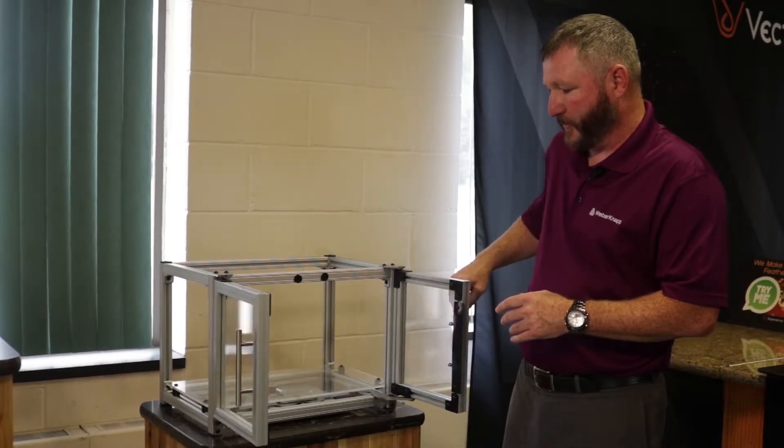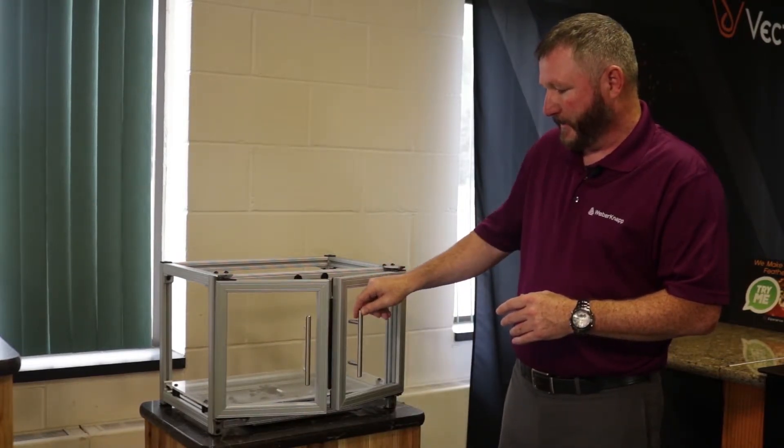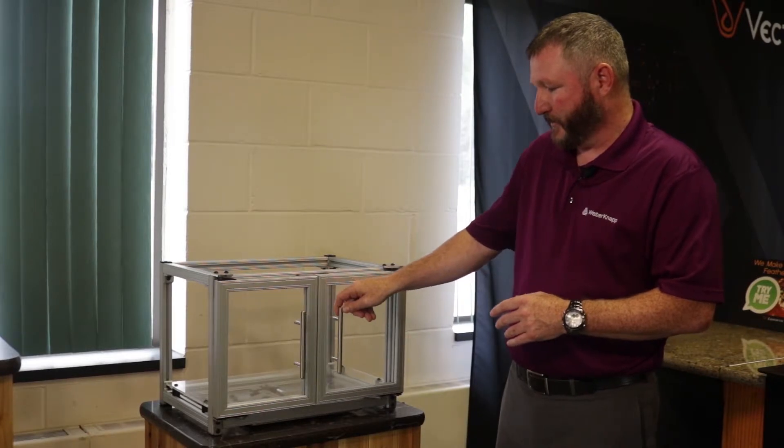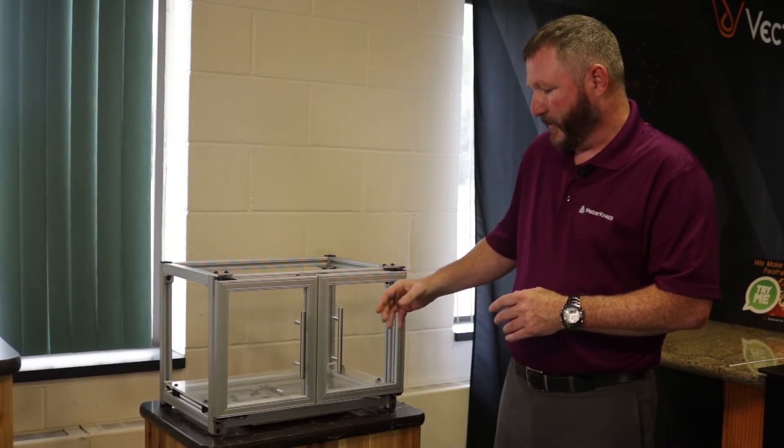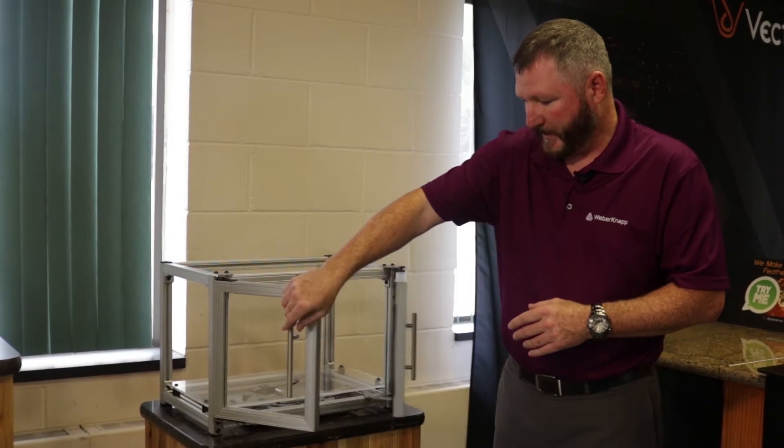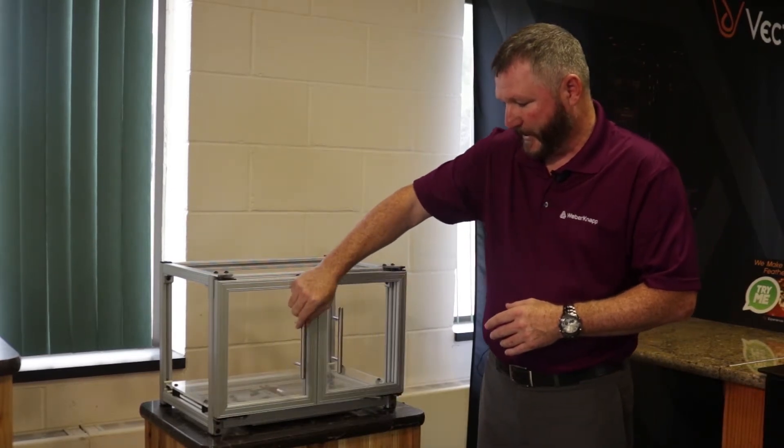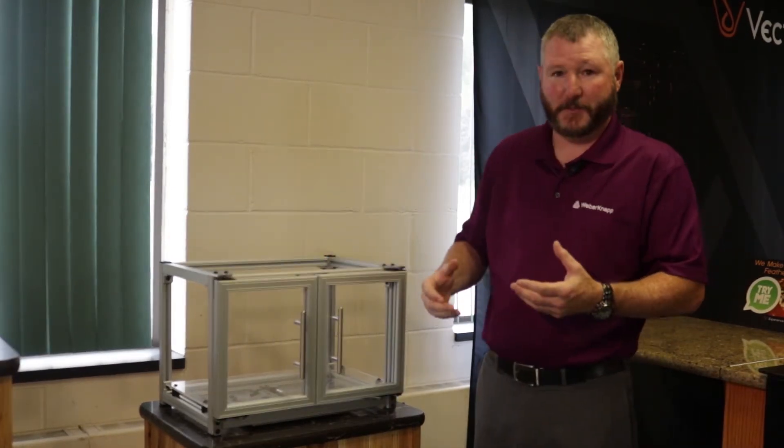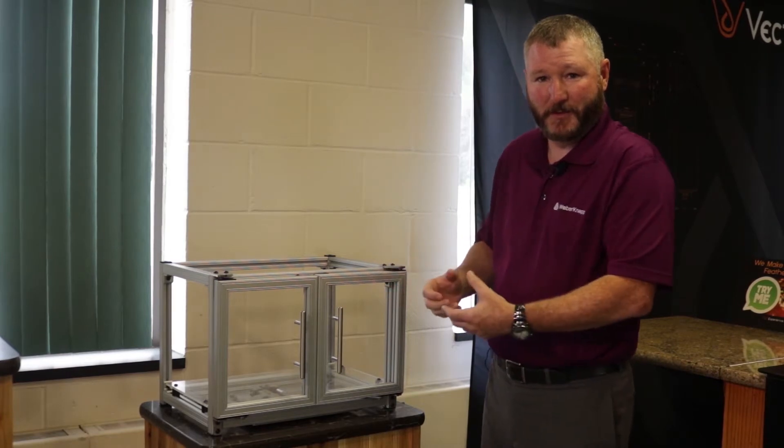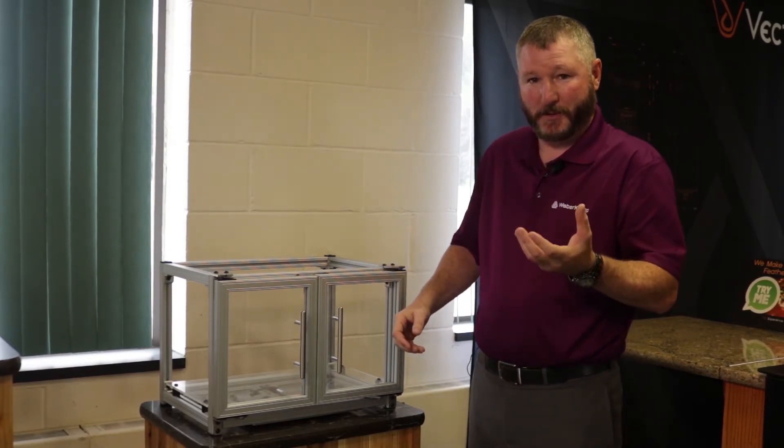It gives you that nice self-closing feature all the way through. You can also open it from the left side or right side just by using one hand. And the reason you want to use one hand is because when you're pulling something out of the oven or putting something in, you're typically only going to have one hand to open it.